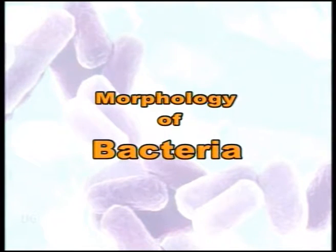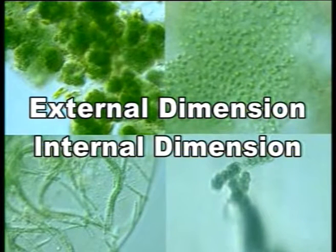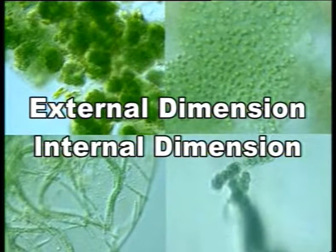As far as the structure of bacteria is concerned, it has two principal components: the external or morphological dimension and the internal dimension.